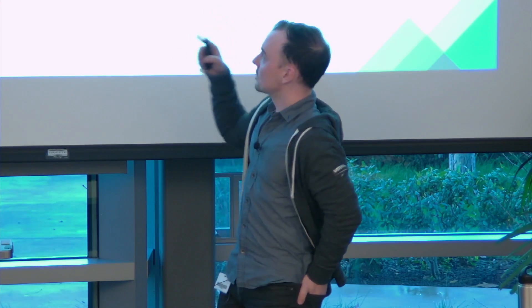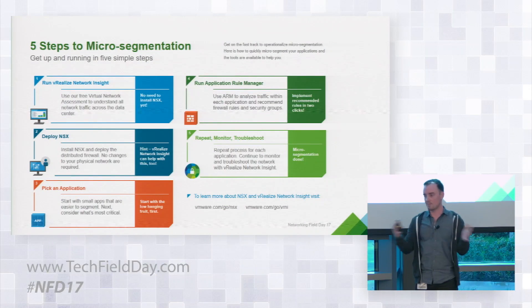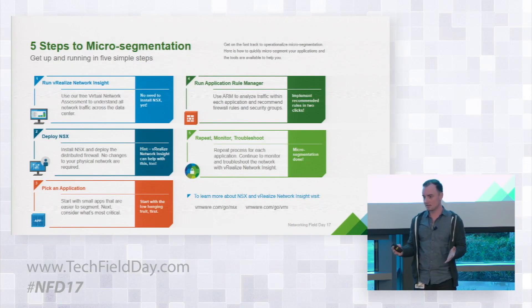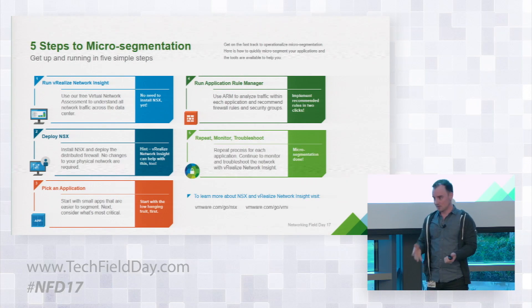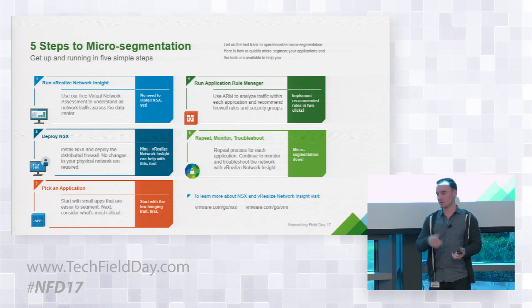On the Application Rule Manager — that's application mapping, right? It's your ADM-type stuff — that's something we're going to demo. We demoed it last year but we're going to show some new capabilities. That's where vRealize Network Insight is just a visibility tool to get broader visibility across the data center. The Application Rule Manager is: now I'm ready to write the rules — I'm going to start a live capture, see what the flows look like, and then lock it down.